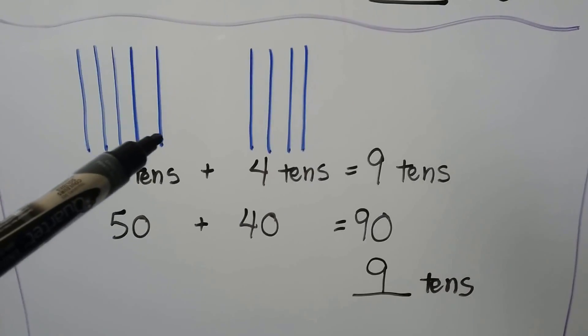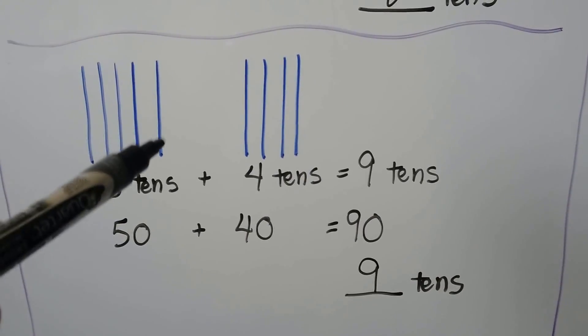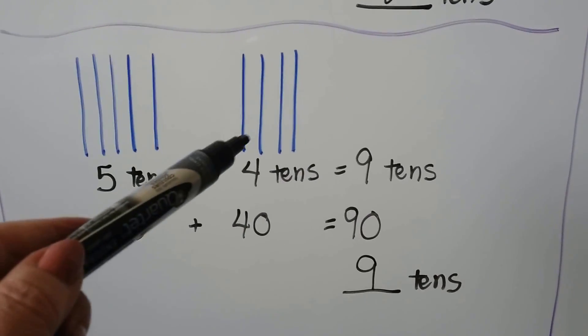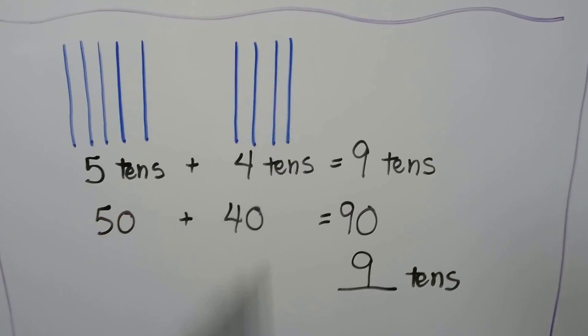We can start with fifty and count by tens: fifty, sixty, seventy, eighty, ninety.